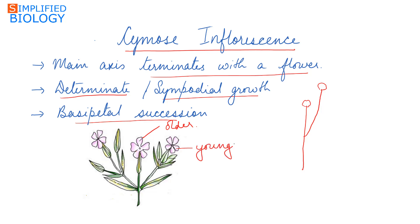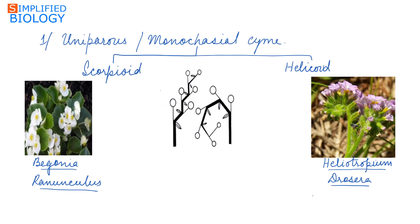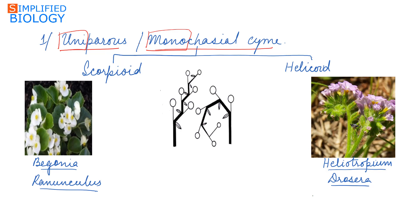The different types of cymose inflorescence: first is uniparous or monochasial cyme. 'Uni' or 'mono' means single, and 'parous' means branch. In uniparous or monochasial cyme, the main stem terminates by a flower; from the main stem develops a branch that terminates by a flower; from that branch develops another single branch which also terminates by a flower.